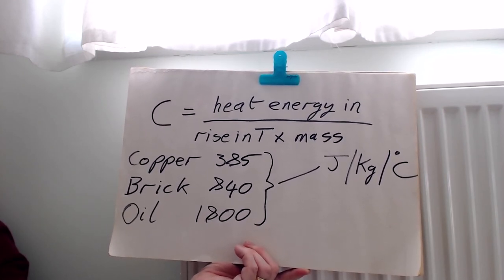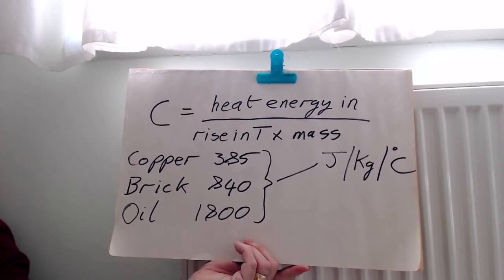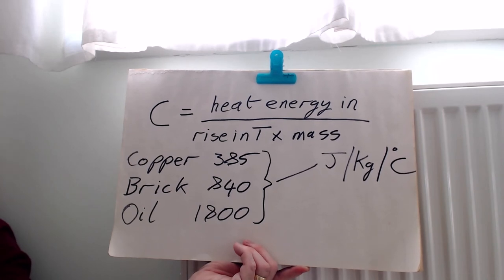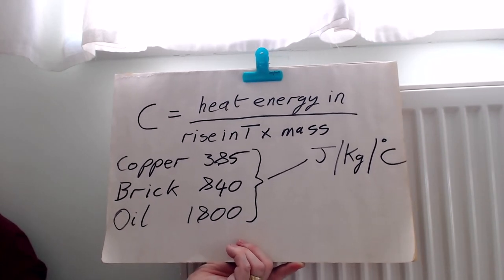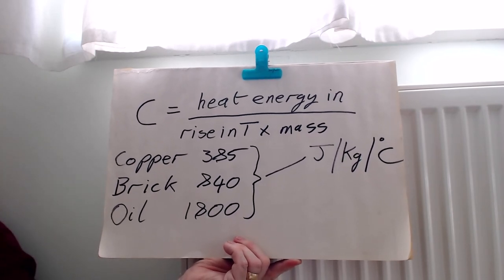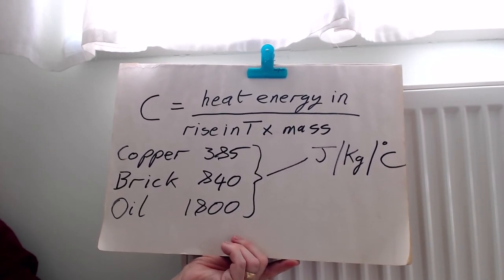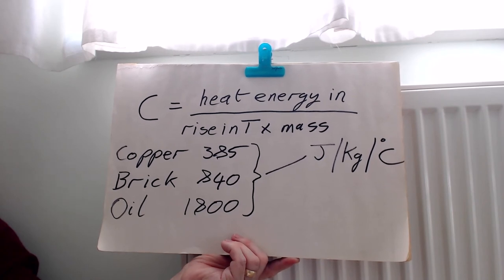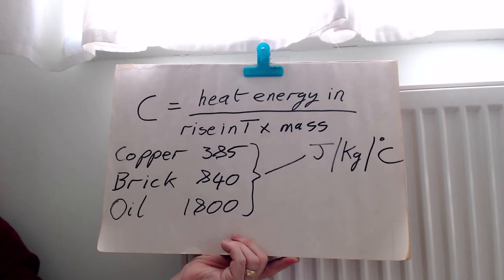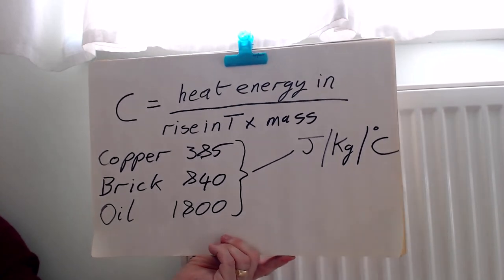So copper much lower than water. Water remember was 4200, copper is only 385. So it takes a lot less heat energy to heat up a block of copper by a given rise of temperature than it does water. Brick is lower than water, only about 840 joules per kilogram per degree centigrade. Oil is a bit higher but still less than half of water. These are all materials that we use in heating.